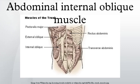Structure: its fibers run perpendicular to the external oblique muscle, beginning in the thoracolumbar fascia of the lower back, the anterior two-thirds of the iliac crest, and the lateral half of the inguinal ligament. The muscle fibers run from these points superiorly and medially to the muscle's insertions on the inferior borders of the tenth through twelfth ribs and the linea alba.